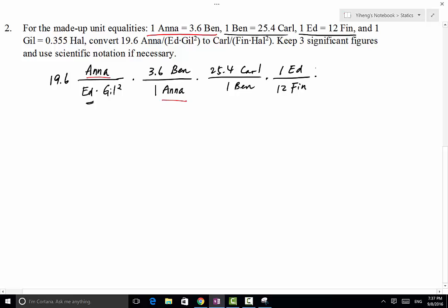Lastly, we want to cancel out between gill and get Hall. Therefore, because gill here is on the denominator as well, we're going to write gill on the numerator and that equals to 0.355 Hall on the denominator. This is not going to cancel out gill squared. Therefore, we need to raise the entire coefficient to the second power.